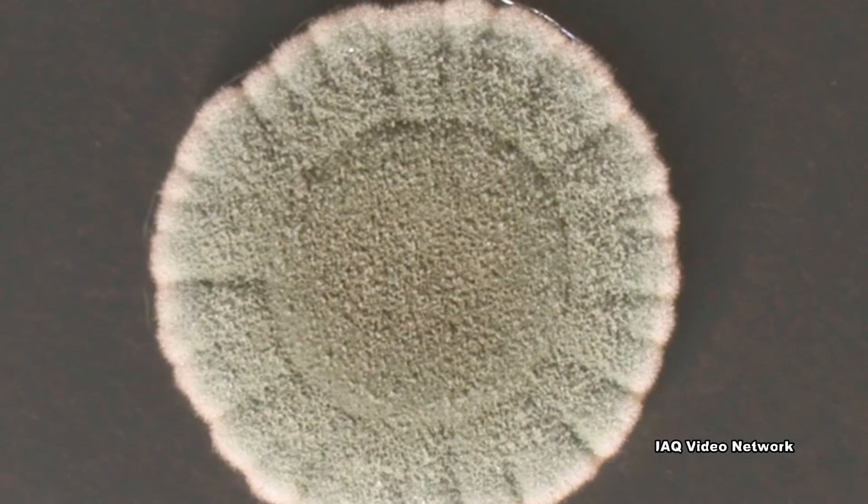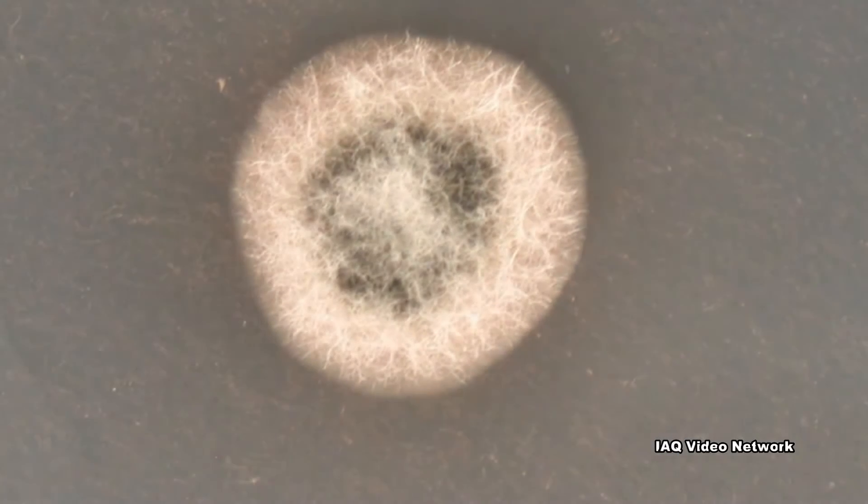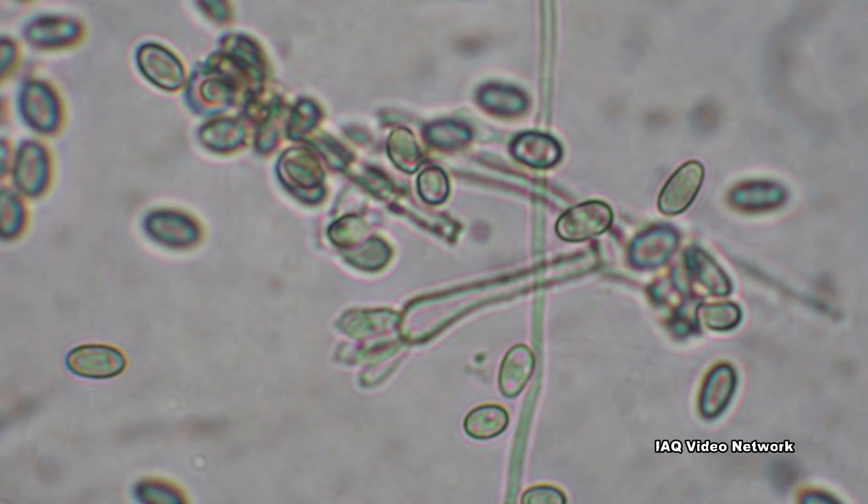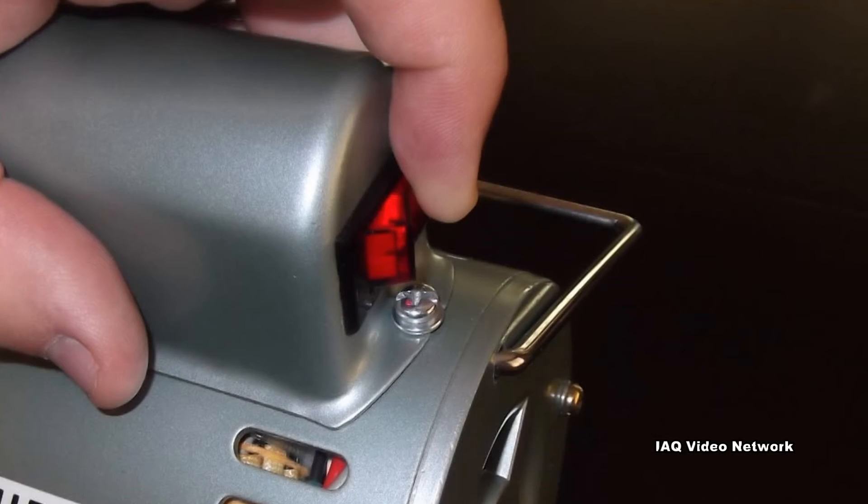No air flow measurements. Most industry standards and guidelines report airborne mold samples as colony forming units per cubic meter of air, but determining the level of mold per volume of air is impossible without controlled air flow through the use of a mechanical pump.